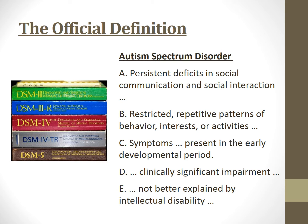C: the symptoms must be present in the early developmental period, i.e. when you're a little kid. D: they must cause clinically significant impairment. And E: they must not be better explained by intellectual disability. That's very medicalised and very negative, couched in terms such as deficit and impairment.